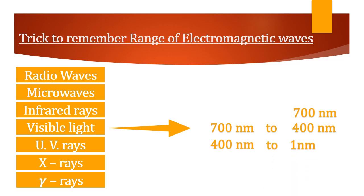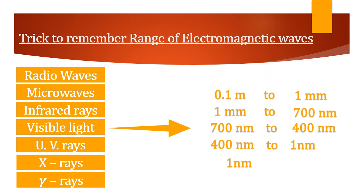The range of UV rays is 400 nanometer to 1 nanometer. We add 1 mm for infrared rays, giving a range of 1 mm to 700 nanometer. Then 1 nanometer moves down towards X-rays and 1 mm moves upward towards microwaves. The range for microwaves is 0.1 meter to 1 mm, and X-rays is 1 nanometer to 10 to the power minus 3 nanometer. For radio waves, 0.1 meter moves up, giving greater than 0.1 meter. For gamma rays, 10 raised to minus 3 nanometer moves down, giving less than 10 to the power minus 3 nanometer. This is a simple trick to remember the range of electromagnetic waves.